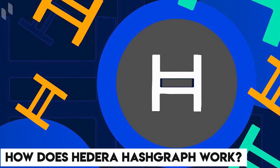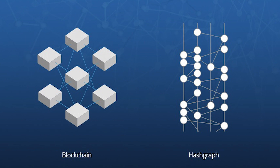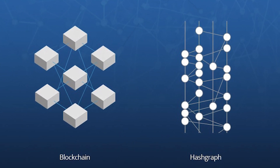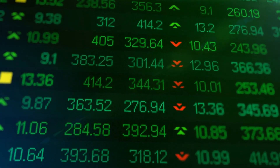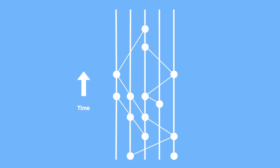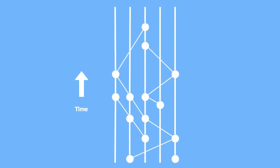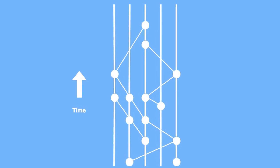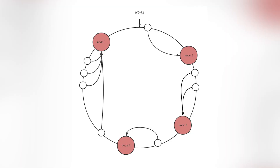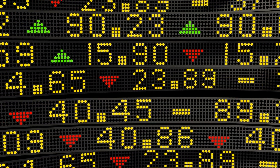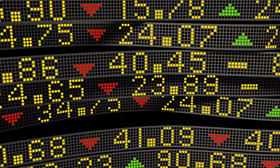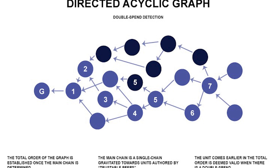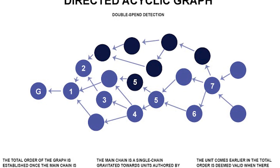How does Hedera Hashgraph work? Hedera Hashgraph works by using a directed acyclic graph (DAG) data structure, which allows for a more efficient way of validating transactions. The network is based on nodes run by computers all around the world. When a transaction is made, it is first hashed and then sent to a node. That node will then validate the transaction by checking against other nodes to see if the transaction is valid. Once the transaction is verified, it is added to the DAG and can't be changed.